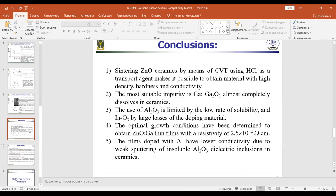The use of aluminum oxide is limited by the low rate of solubility and indium oxide by large losses of the doping material. The optimal growth conditions have been determined to obtain zinc oxide doped with gallium thin films with a resistivity of 2.5×10⁻⁴ Ω·cm. The films doped with aluminum have lower conductivity due to weak sputtering of insoluble aluminum oxide dielectric inclusions in ceramics.